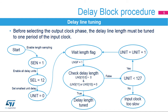Before selecting an output clock phase, the delay line must be tuned to span one input clock period. To do this, set the SEN bit to 1 to enable the delay length sampling — this will at the same time disable the output clock. Then set SEL 3 to 0 to 1100 to enable all delay units. Select the smallest unit delay by setting Unit 6 to 0 to 0. Writing the register unit field will trigger the delay line sampling.